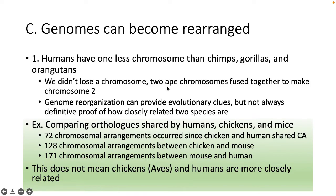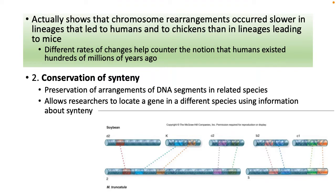Genomes can be rearranged. Chimps, gorillas, and orangutans have one more chromosome than we do — it appears that two ape chromosomes fused together to form our chromosome 2. Genome reorganization provides some clues about relatedness. Comparing orthologs shared by humans, chickens, and mice: 72 chromosomal arrangements occurred since chicken and human shared common ancestors, 128 arrangements between chicken and mice, and 171 between mice and humans. Fewer chromosomal rearrangements occurred in lineages leading to humans and chickens than to mice because mice have a faster generation time.